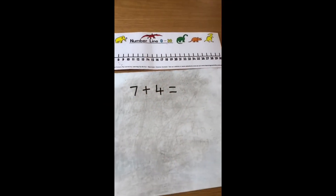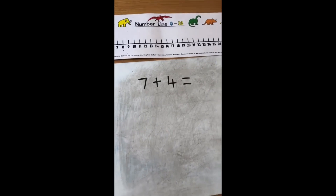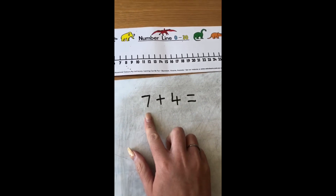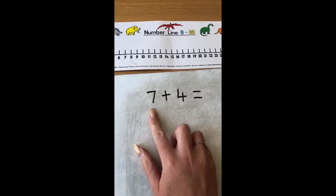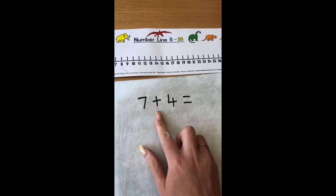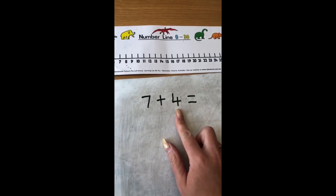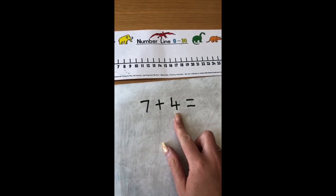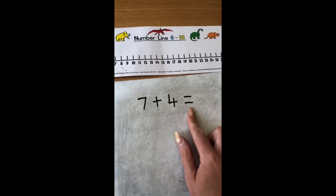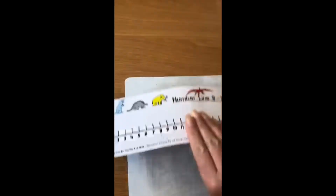So to start with, I have written a number sentence. Let's go through the number sentence first, and then we can use the number line to help us answer it. So the first number in our number sentence — who can remember which number this is? Well done, it's number seven. What's this sign again? Well done, it's add. So we've got seven, add — which number is this? Brilliant, it's number four. So we've got seven add four equals, and then we need to try and find the answer. We're going to use our number line to help us.